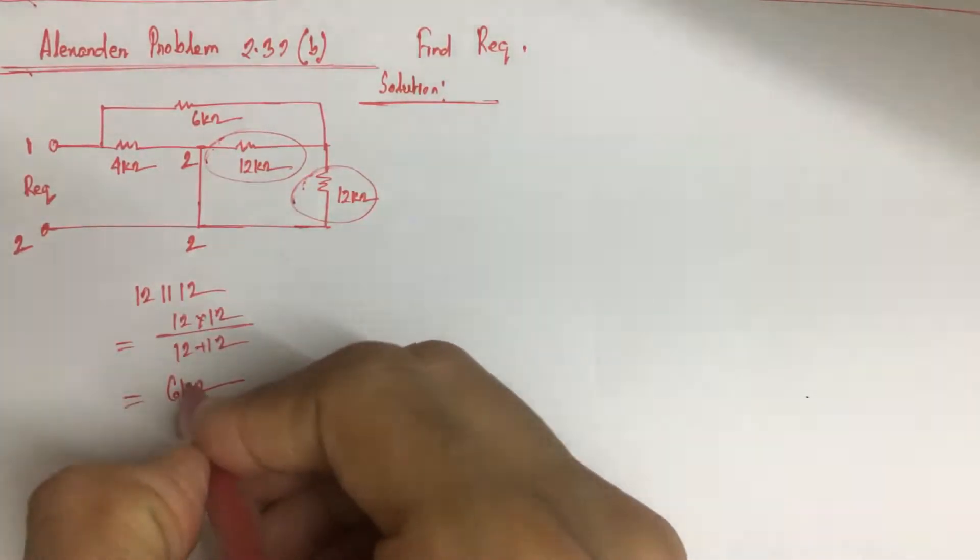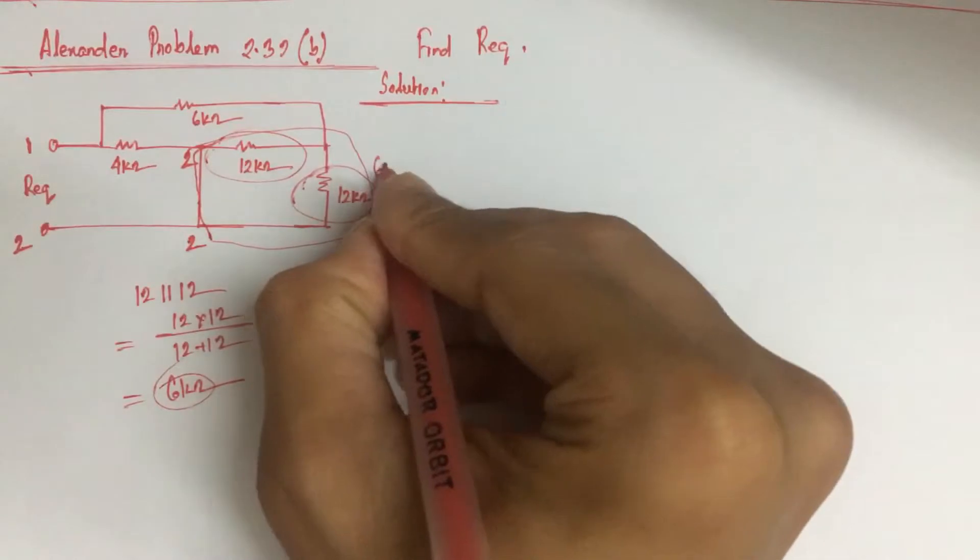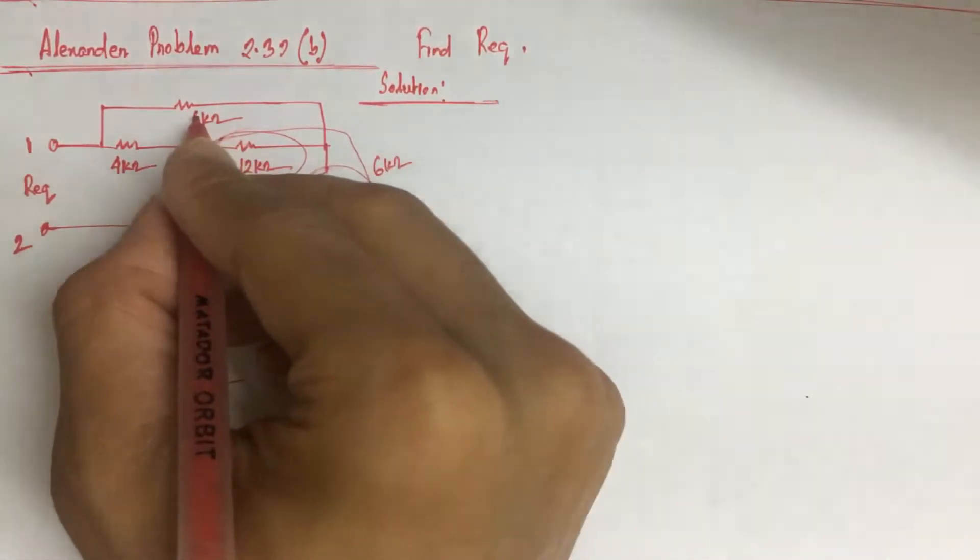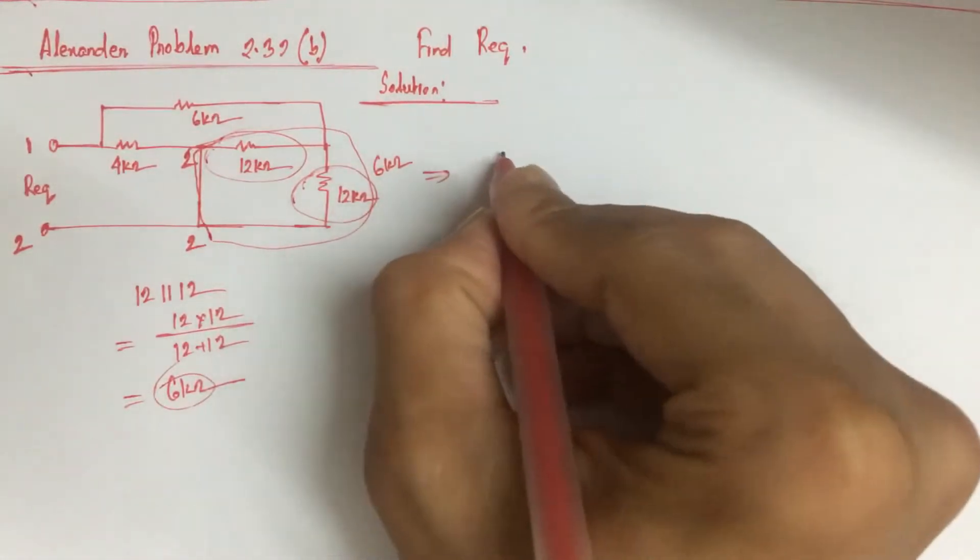And this 6 kohm resistance and this 6 kohm is in series with this 6 kohm resistance. So if we redraw the circuit, we will have: